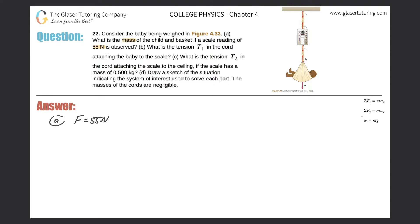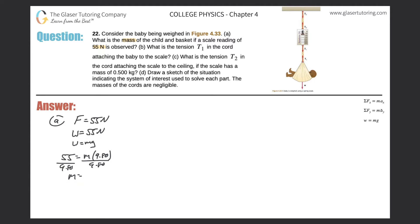We can think of this as a W equals mg problem, or equivalently as the sum of forces in the y-direction equals ma. The acceleration due to gravity is g, so it doesn't matter how we view it. W equals 55 newtons. Using W equals mg, we get 55 equals m times 9.80. Dividing both sides by 9.80, we get m equals 55 divided by 9.8, which is 5.6 kilograms.